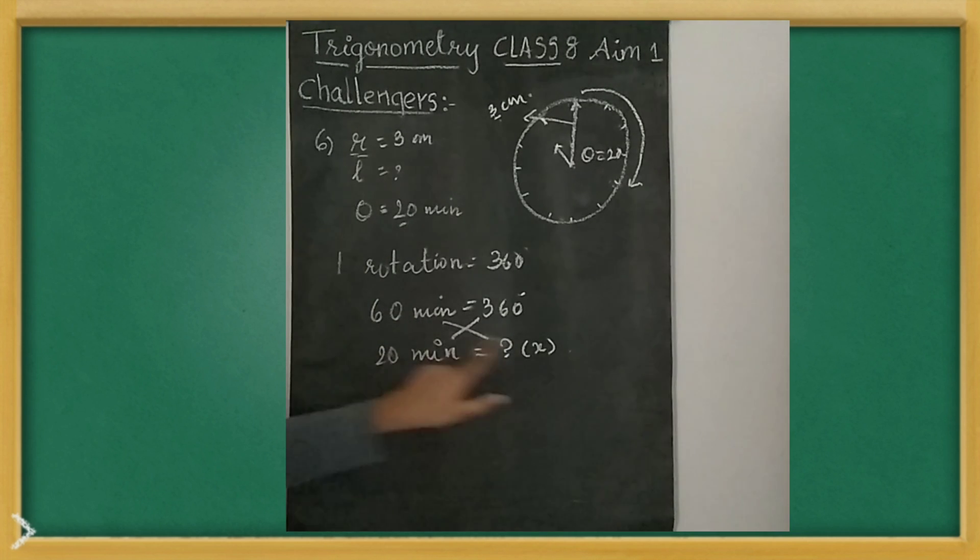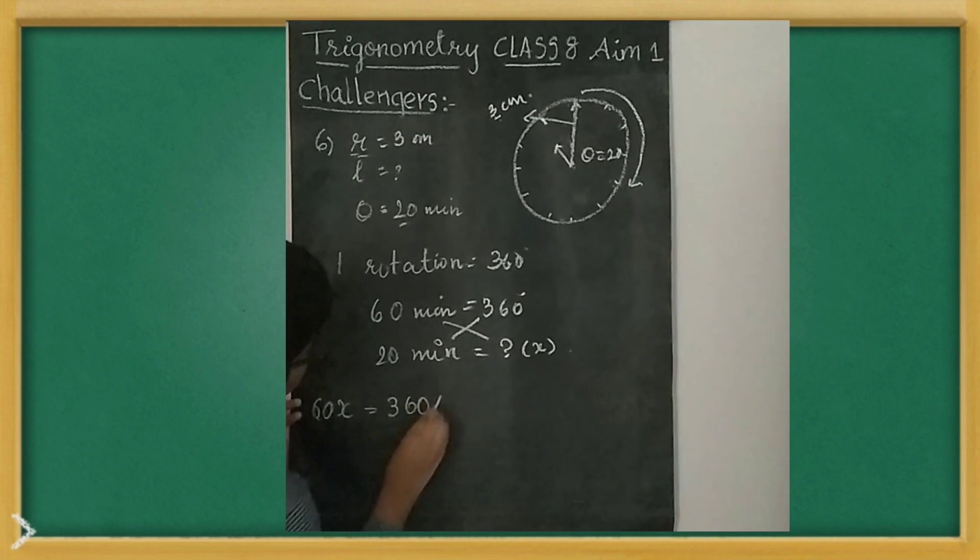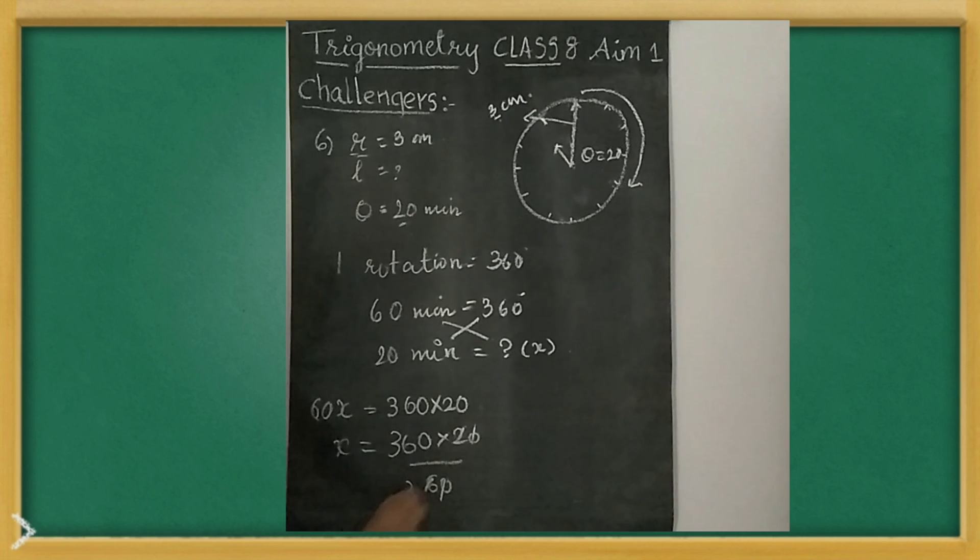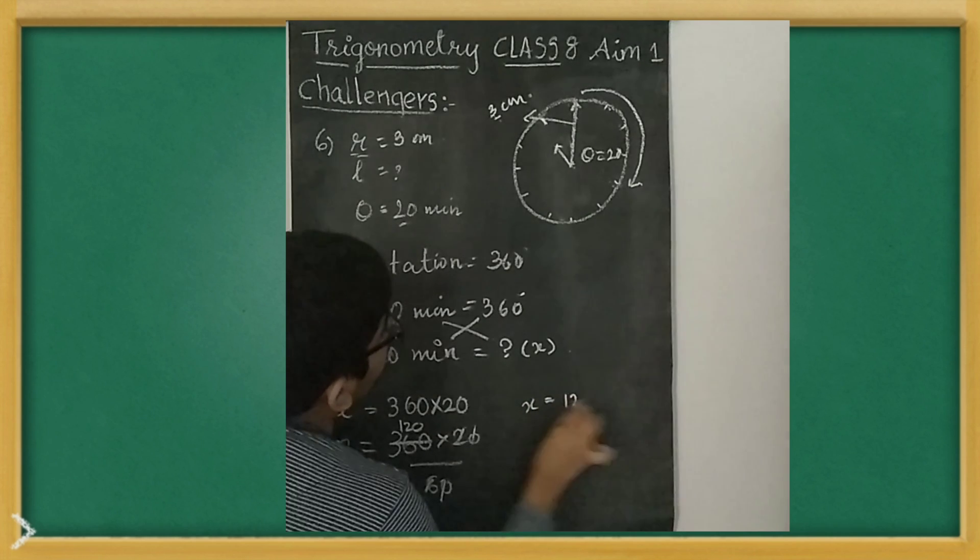So this number will be multiplied to this and 360 will be multiplied to 20. Now, 60x is equal to 360 into 20. Don't need to multiply, we can cancel with 60. So x you will keep to LHS only, 60 you will send to RHS. 360 into 20 by 60. Now, cancel and simplify. So x value is 120 degrees.